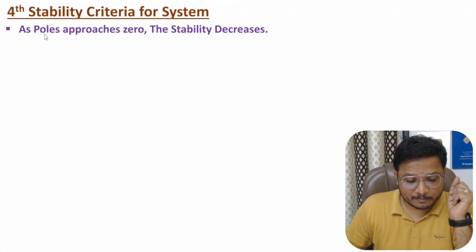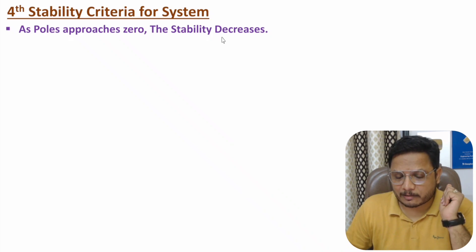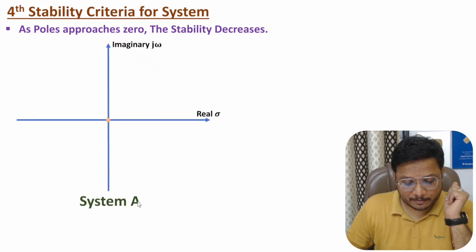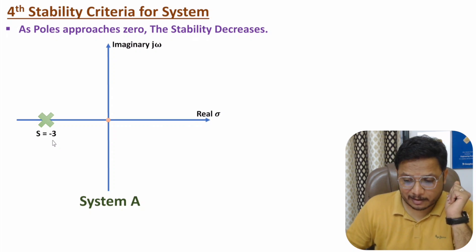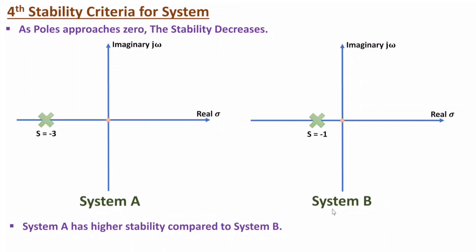In the fourth criteria, we understand relative stability. As a pole approaches towards zero, stability decreases. For example, consider system A with a pole at s = −3, and system B with a pole at s = −1. System A is relatively more stable compared to system B, because the pole of system A is far from the origin while the pole of system B is nearer to the origin. So relative stability is based on the location of the pole with respect to the origin — as a pole approaches zero, the stability of the system decreases.